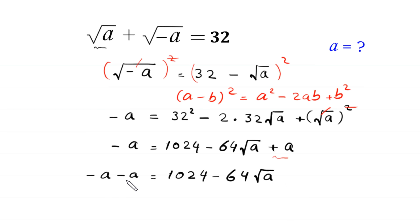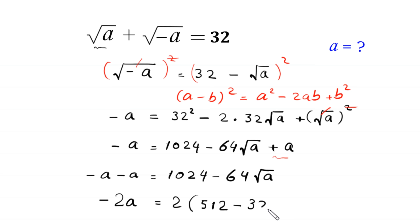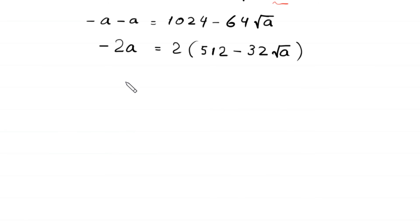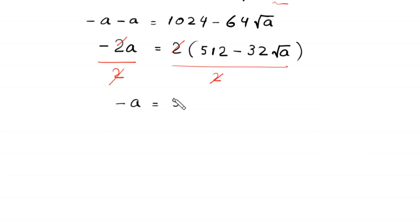So -2a = 1024 - 64√a. Dividing both sides by 2, we get -a = 512 - 32√a.